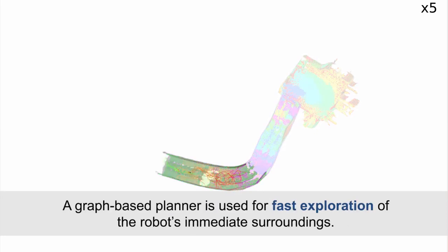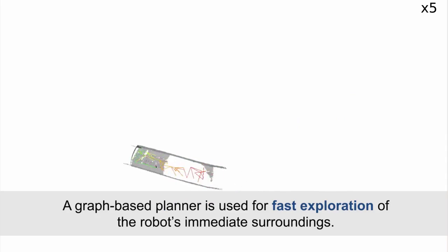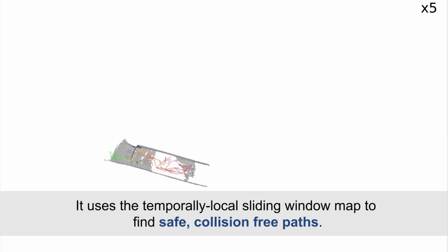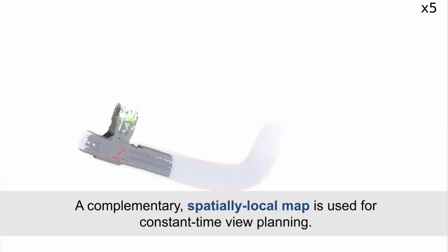A graph-based planner is used for fast exploration of the robot's immediate surroundings. It uses the temporally local sliding window map to find safe, collision-free paths. A complementary, spatially local map is used for constant time view planning.